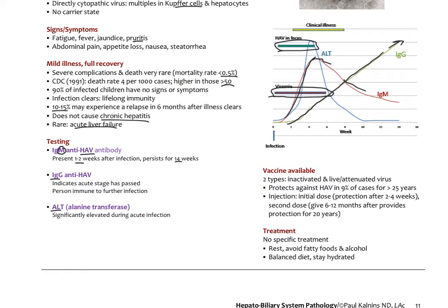This one has a vaccine available. There's two types, inactivated and live attenuated, that protects against HAV. Should be 90% of cases for more than 25 years. The initial dose gives protection after two to four weeks. If you're going to go traveling, you need to get these well ahead of time. Second dose is given six to 12 months after that first dose, and that gives protection for 20 years.